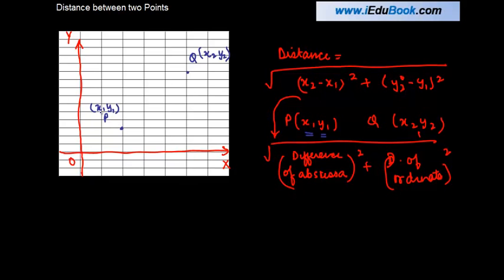Now what does this mean? If we say that P has coordinate of x1 and y1 what does this mean? x1 basically represents, this basically means in simple language, the distance of this point from the origin. And if you represent y1, y1 is this distance.